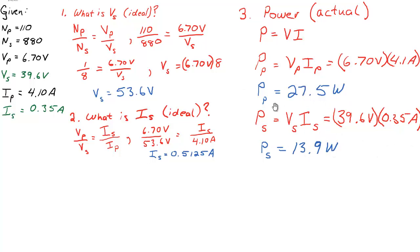If it was ideal, the primary and the secondary would both be 27.5 watts. But obviously the transformer itself is heating up. And like I said before, perhaps some of the magnetic field is not being fully captured on the secondary side.